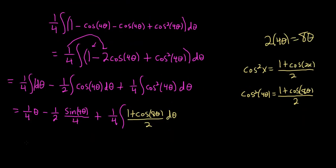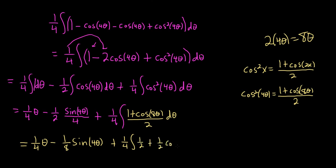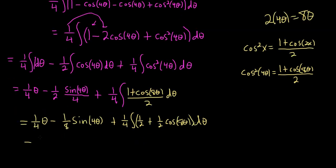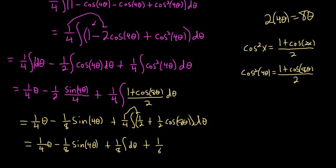This gives us 1 fourth theta minus 1 eighth sine 4 theta. Then distributing 1 fourth into (1 plus cosine 8 theta)/2: 1 fourth times 1 half is 1 eighth, and 1 fourth times cosine 8 theta over 2 is 1 eighth cosine 8 theta. So we add 1 eighth times the integral of d theta plus 1 eighth times the integral of cosine 8 theta d theta. Integrating cosine 8 theta gives sine 8 theta over 8, so the last term becomes 1 eighth times sine 8 theta over 8.